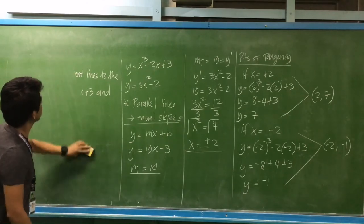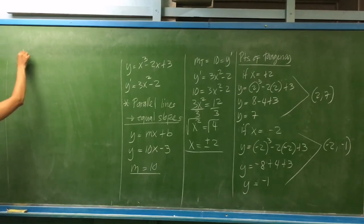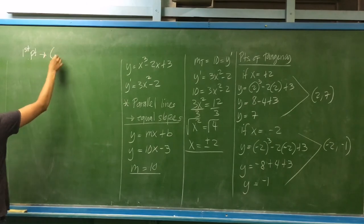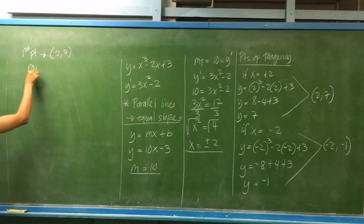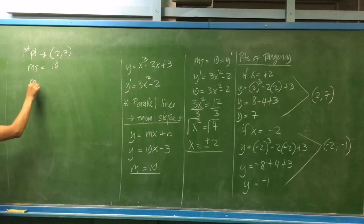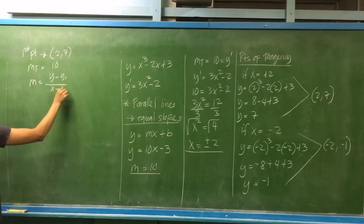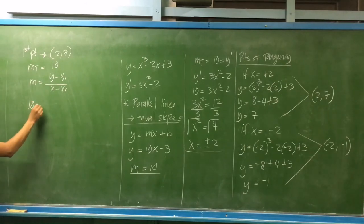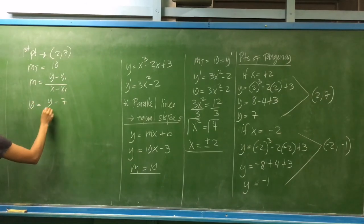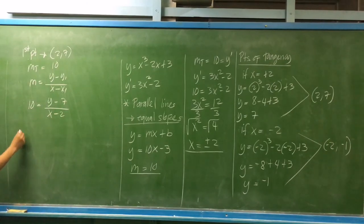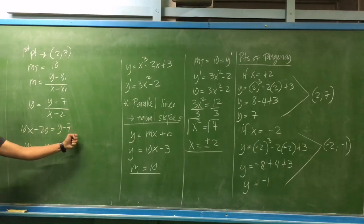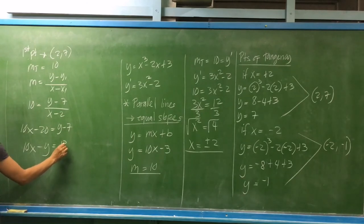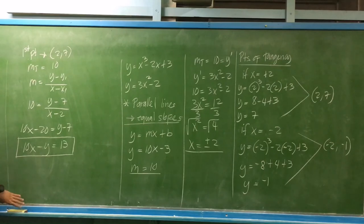For the first tangent line at point 2, 7 with slope 10: using the slope equation, 10 equals y minus 7 over x minus 2. By cross multiplication: 10x minus 20 equals y minus 7. So 10x minus y equals negative 20 plus 7, which simplifies to 10x minus y equals 13. This is the equation of the first tangent line.